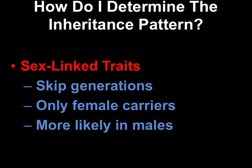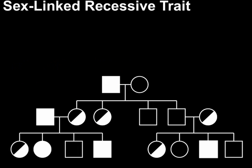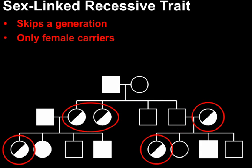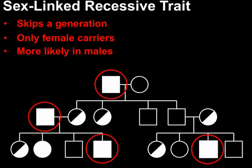You're also going to be more likely to find it in males. Here's an example of a sex-linked recessive trait. Notice it skipped a generation, I only have female carriers, and most of the people that have it are males. The only female that has it — not only was her mom a carrier, but her dad also had it, and that's the only way you can get a female with one of these traits.